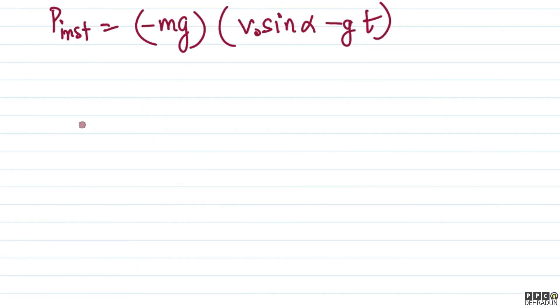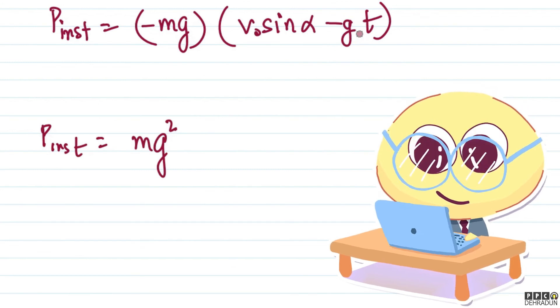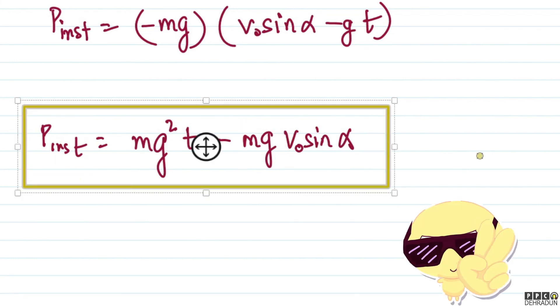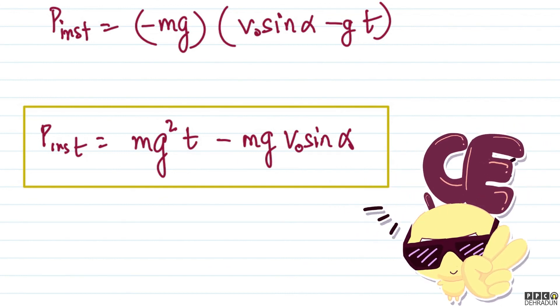If we simplify this, then the instantaneous power value comes out to be mg squared times t minus mg v-naught sin alpha. So this is the value of instantaneous power as a function of time.